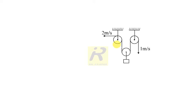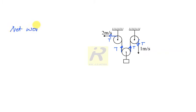In the second method, observe the tensions: there is a tension in this direction, and here also tensions — two tensions on each side. Since the net force is zero and the system is in equilibrium, the net work done by all the tensions must equal zero.